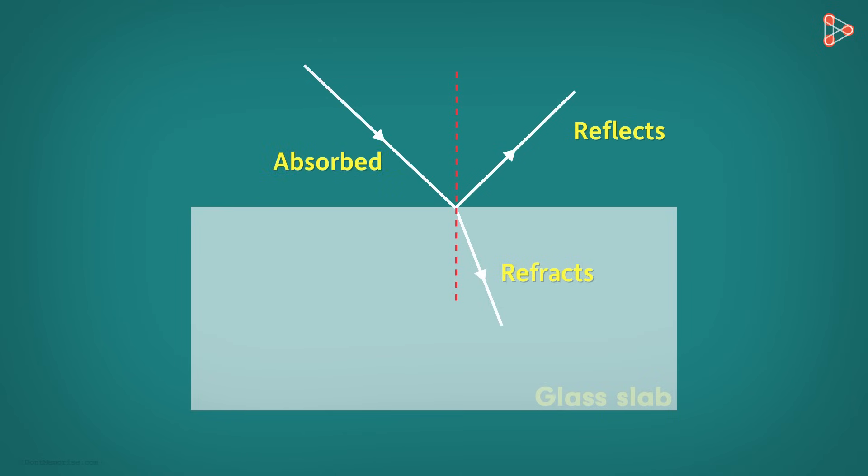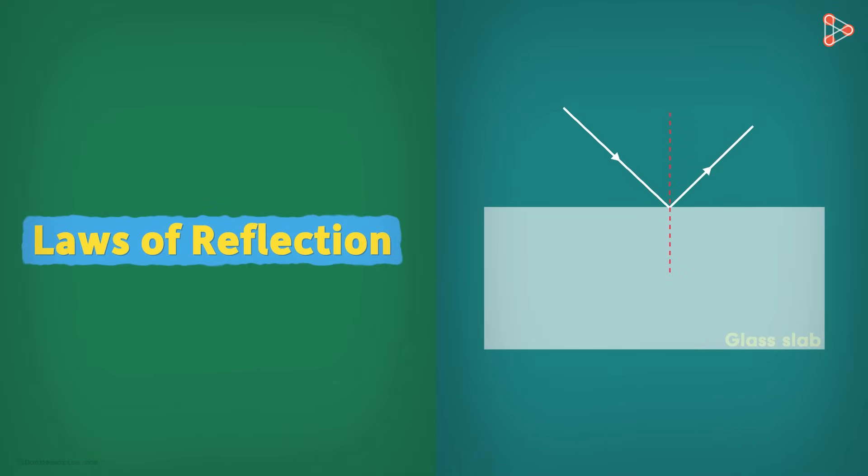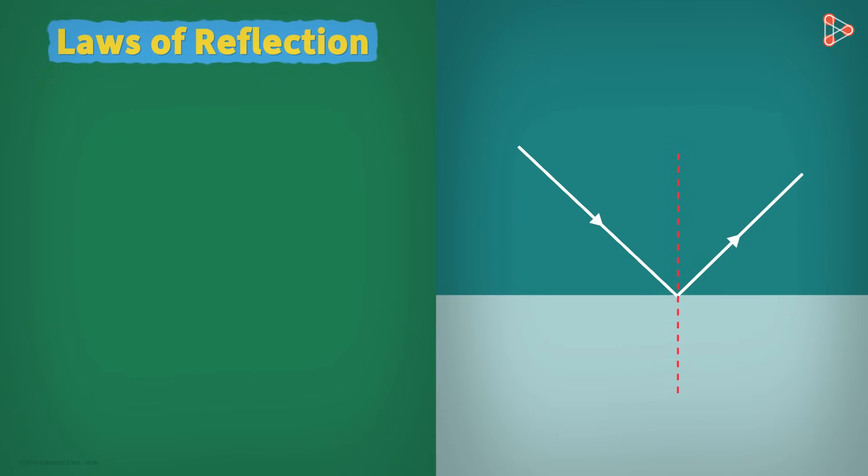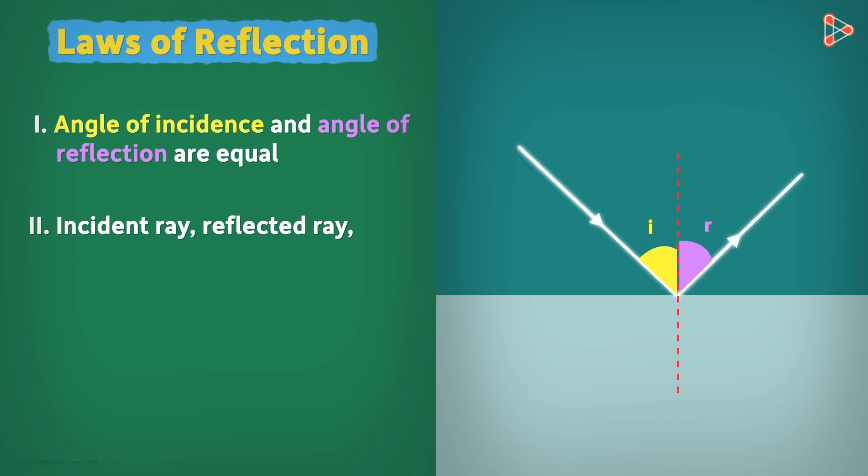In the past, we have already discussed laws of reflection. Do you remember those laws? The first one says that the light ray which is incident is reflected in such a way that the angle of incidence and the angle of reflection are equal. And the second one says that the incident ray, the reflected ray, and the normal all lie in the same plane.